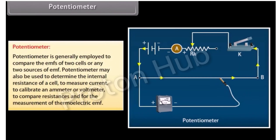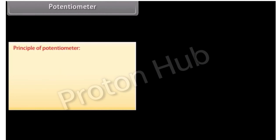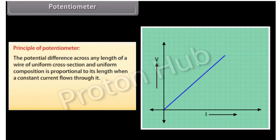A potentiometer is generally employed to compare the EMFs of two cells or any two sources of EMF. It may also be used to determine the internal resistance of a cell, to measure current, to calibrate an ammeter or voltmeter, to compare resistances, and for measurement of thermoelectric EMF. The potentiometer works on the principle that the potential difference across any length of a wire of uniform cross-section and composition is proportional to its length when a constant current flows through it.